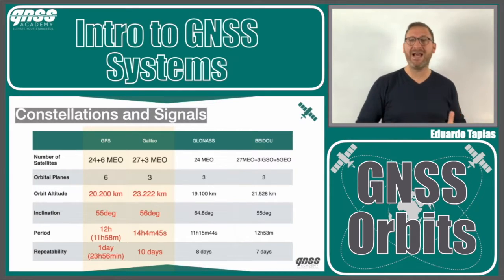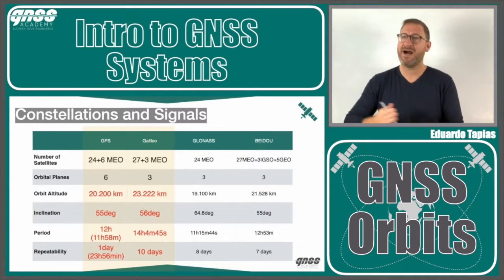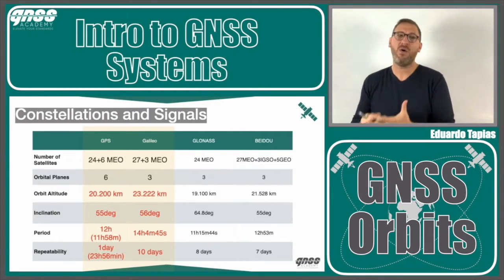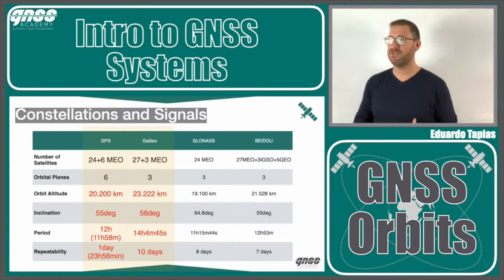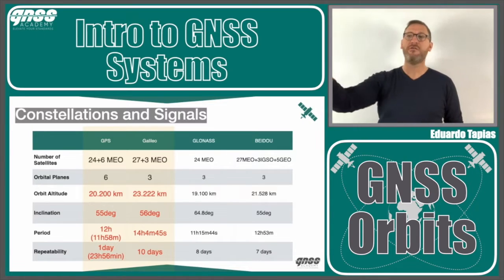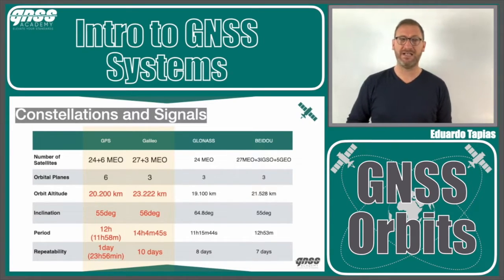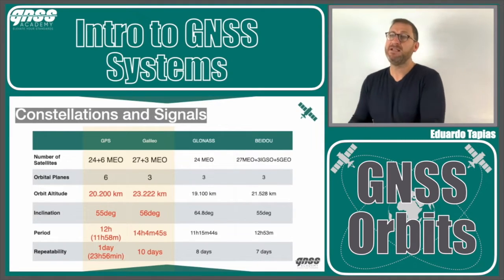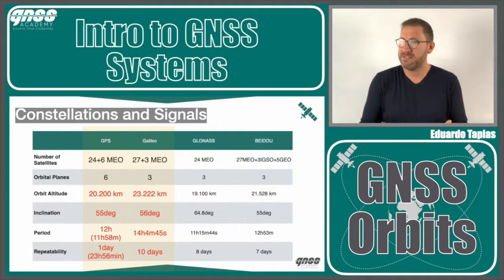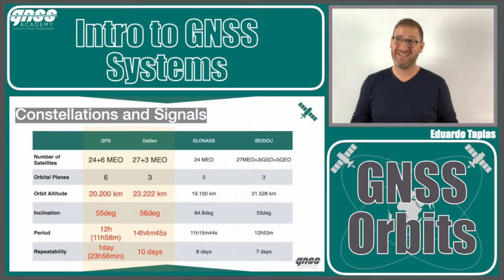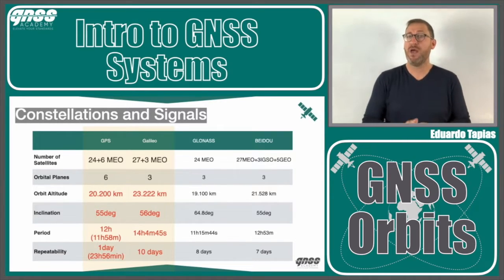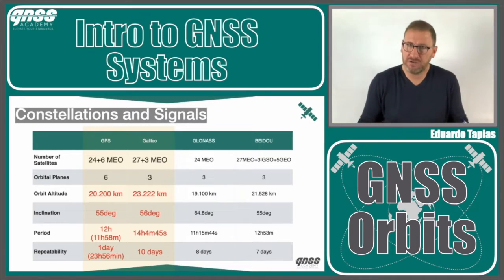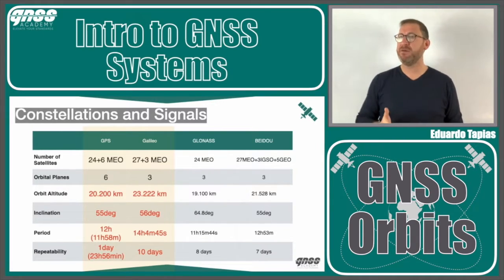In the case of Galileo, the period is a little bit higher because the satellites are at a higher altitude — it's 14 hours, 4 minutes and 45 seconds for a Galileo satellite to complete one full orbit. In this particular case, we don't have the same repeatability property. The constellation will repeat only every 10 days, meaning a receiver must wait 10 days to see the same satellites in the same position.